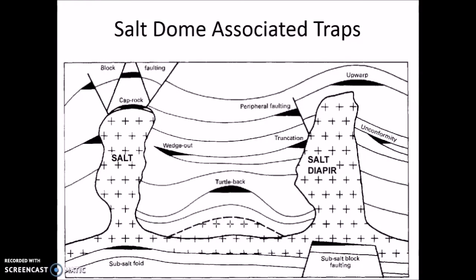Another example of a stratigraphic trap is salt diapers. They are caused by the upward movement of sediments that are less dense than those surrounding or overlying them.